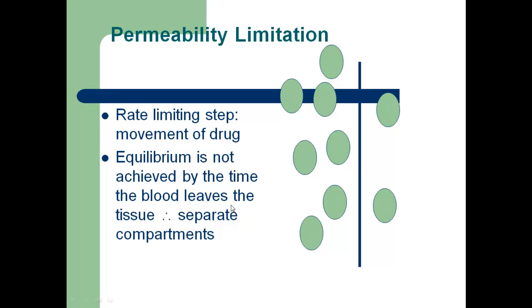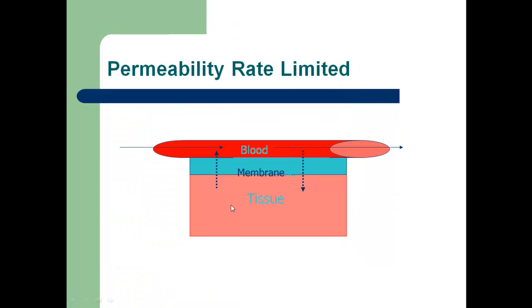The rate limiting step here, like I said, isn't the blood. The blood is there in plenty of time. We just have these large polar drugs. And as we know earlier, large polar drugs, ionized drugs, don't cross the membrane very easily. And this is what we would call a permeability issue.